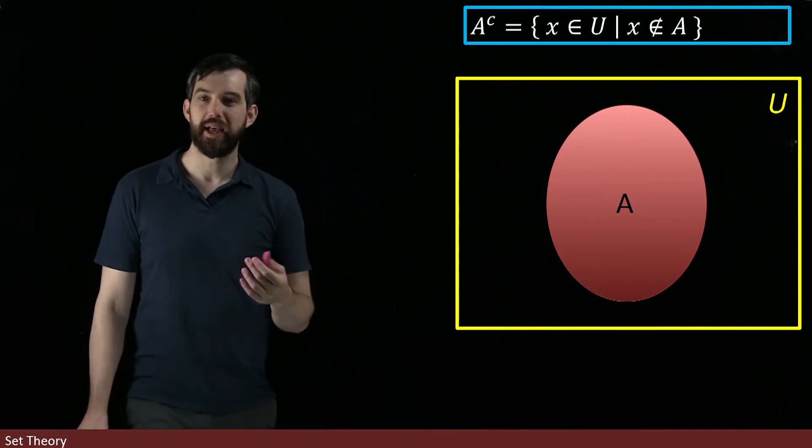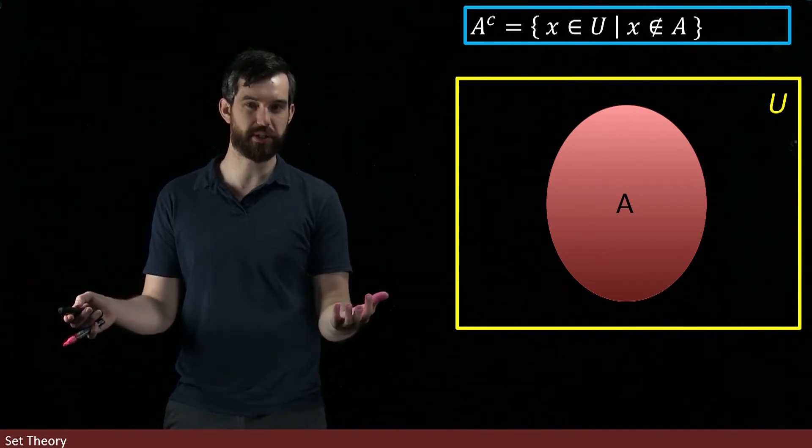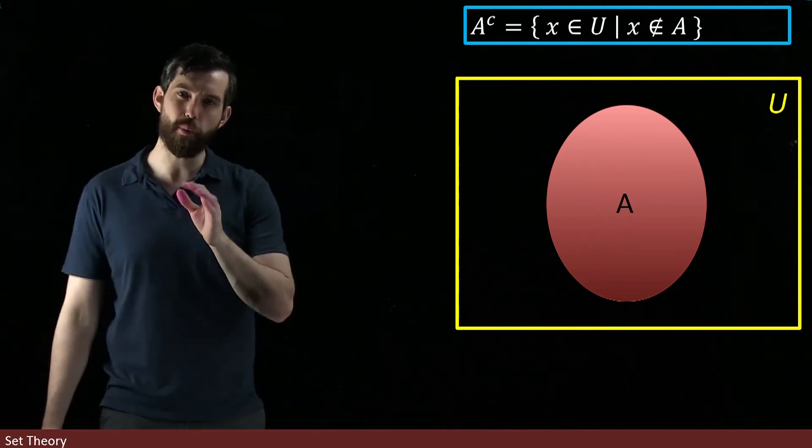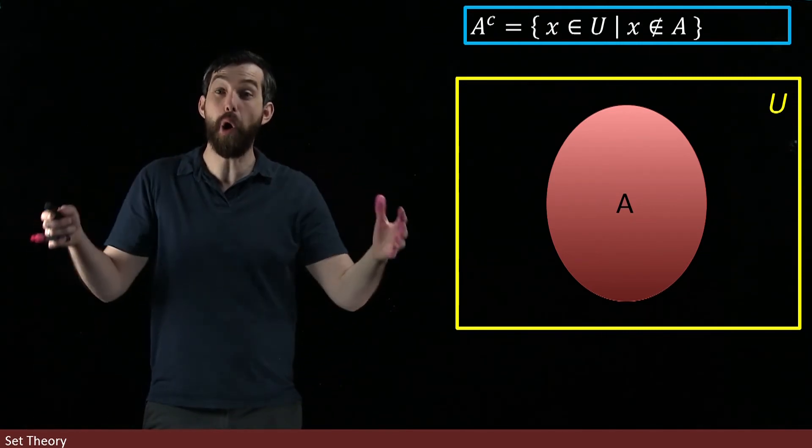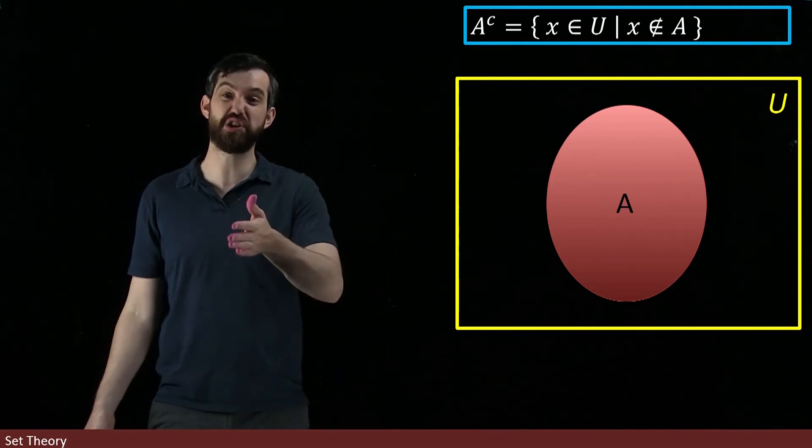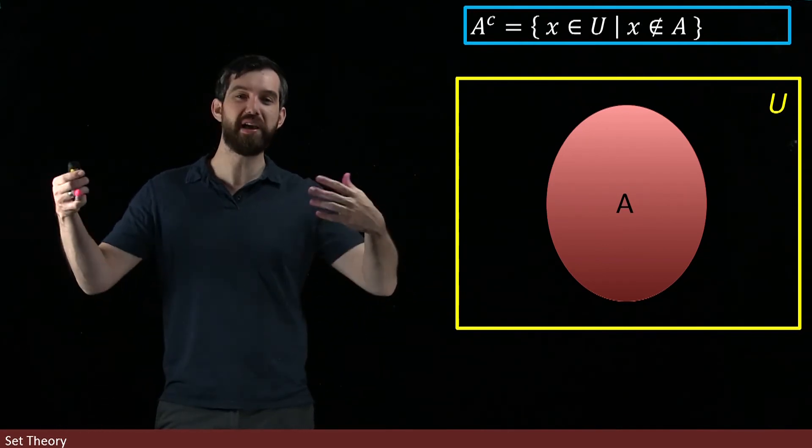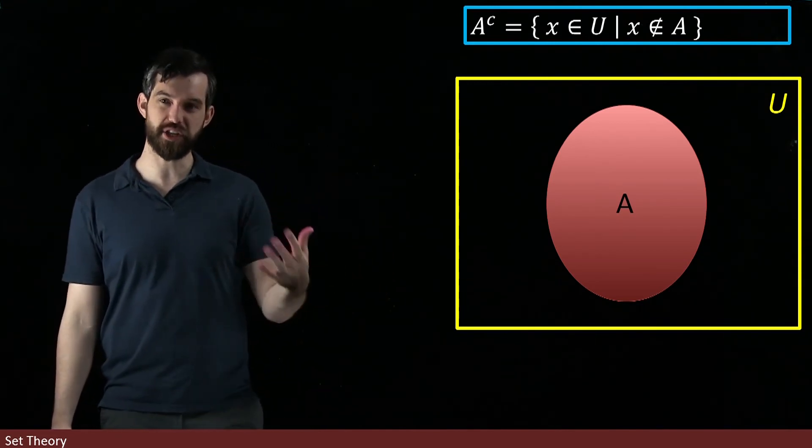So for example, what is the complement of the even integers? Well, it does depend on what my universe is. The complement of the even integers, like within all of the integers is gonna be the odd integers, right? Every integer that is not even is odd. So if my universe is all of the integers, the complement of the evens is the odds.